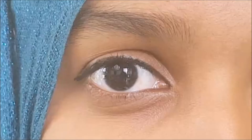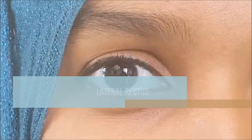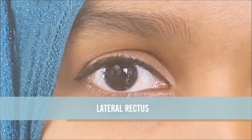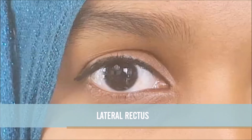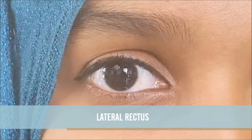Also acting in the horizontal plane is the lateral rectus muscle. However, unlike most of the other extraocular muscles, this muscle is supplied by the sixth cranial nerve, the abducens nerve. Its action moves the eye laterally, which is referred to as abduction.